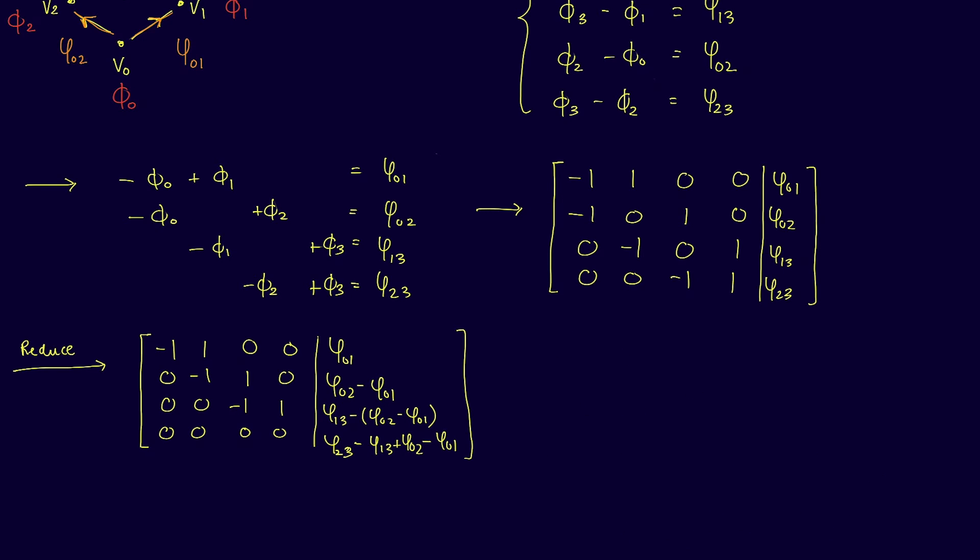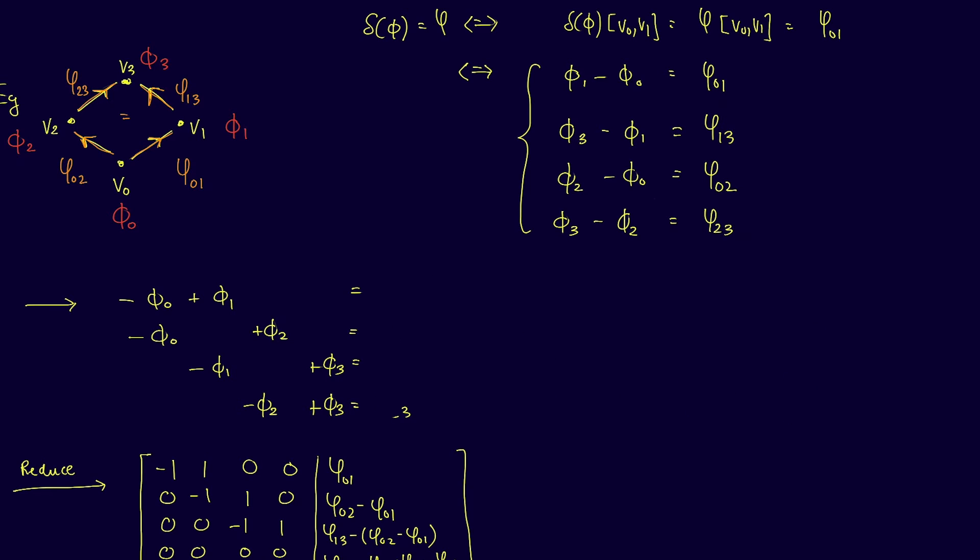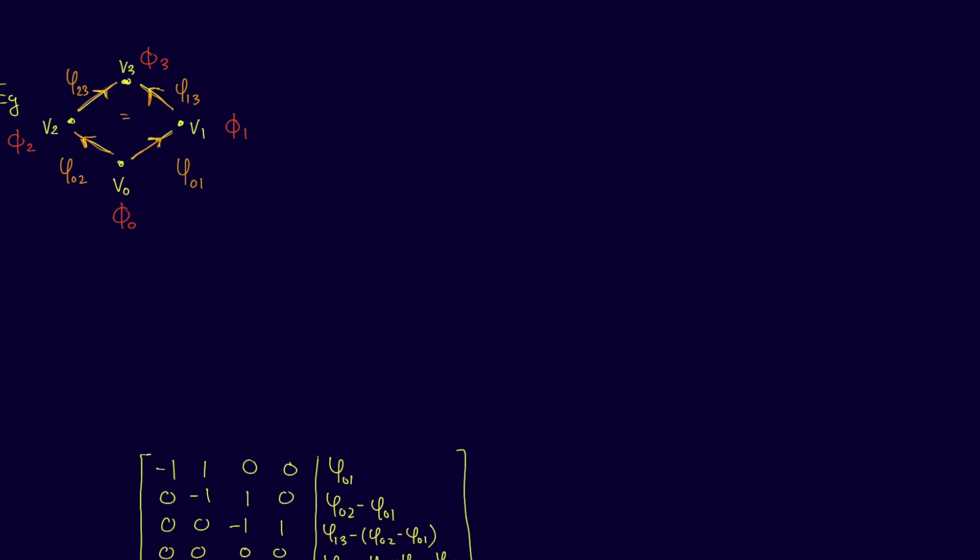So where does cohomology come into it? The cohomology groups are obtained by measuring the failure of exactness of the sequence of maps: 0 → Δ⁰ → Δ¹ → 0. In other words, the zeroth cohomology of X with coefficients in G is defined as the kernel of δ modulo the image of 0. This is just the kernel of δ. The first cohomology of X is defined as the kernel of the zero map modulo the image of the co-boundary map δ.